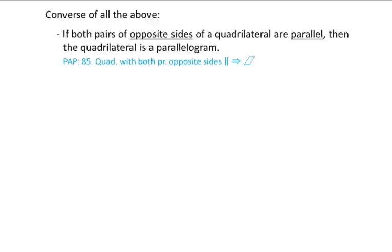Next, we're going to look at the converses of all the things we've talked about. The converse is just the flip-flop from what we had before. Before we had: if a quadrilateral is a parallelogram, then the opposite sides are parallel. The converse is: if both pairs of opposite sides of a quadrilateral are parallel, then the quadrilateral is a parallelogram. The most important part: opposite sides parallel, then parallelogram.